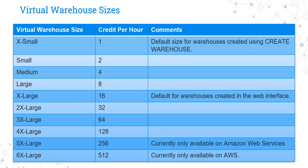Virtual warehouses come in T-shirt sizes such as extra small, small, medium, large, extra large, 2x large, 3x large, 4x large, 5x, and 6x. If you are going to face the certification exam for Snowflake, then these virtual warehouse sizes are important to know.